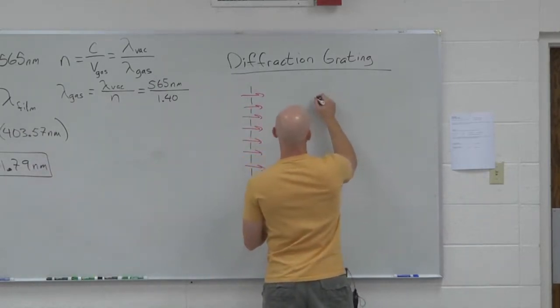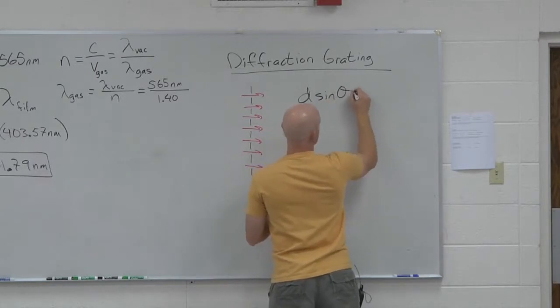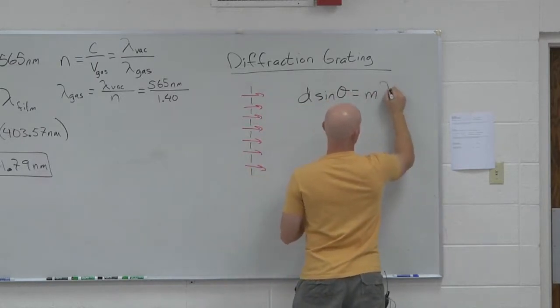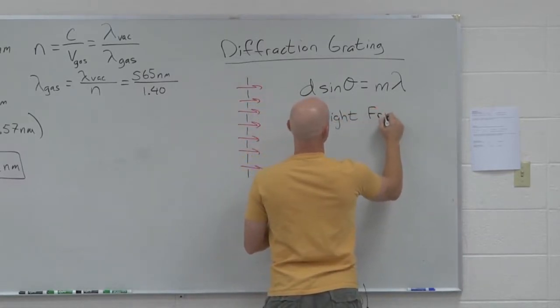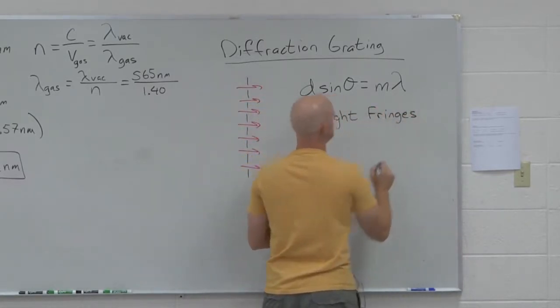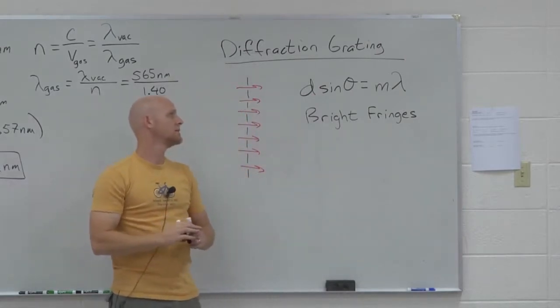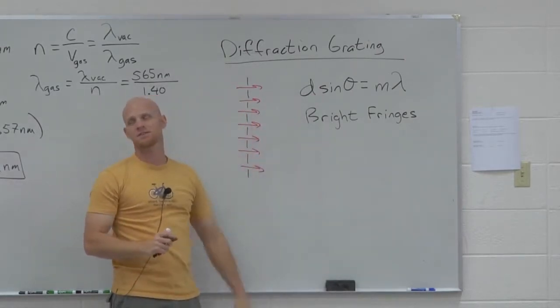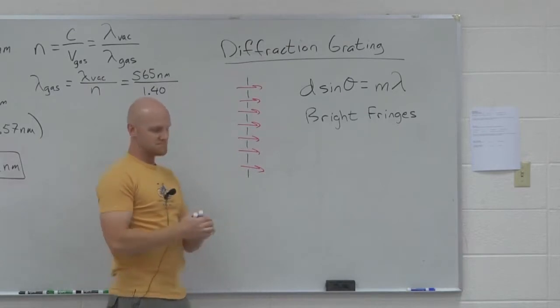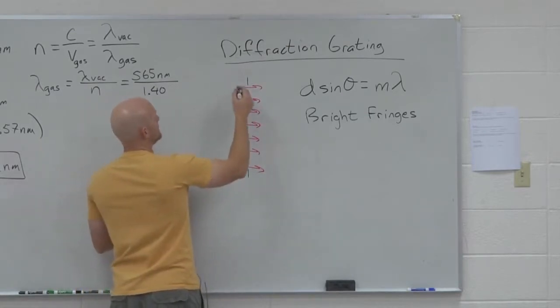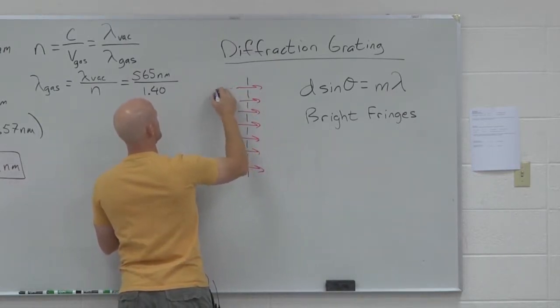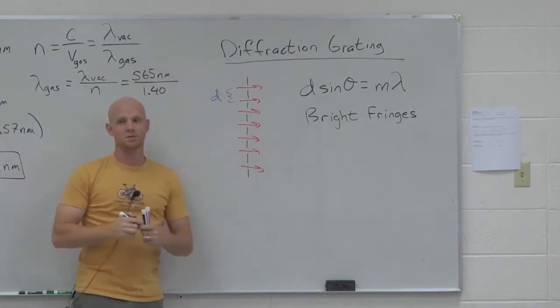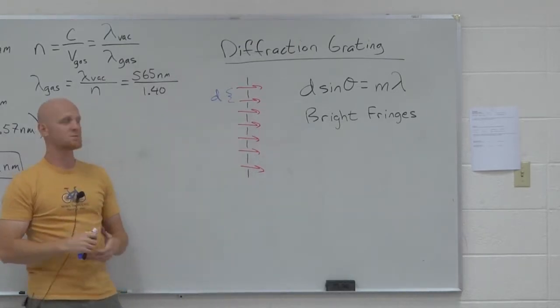Pretty much your derivation is exactly the same way we derived it for a two slit. Now you just have many. In this case the distance of separation between each individual slit we call d. For the most part pretty much analogous to the two slit experiment just with many slits.